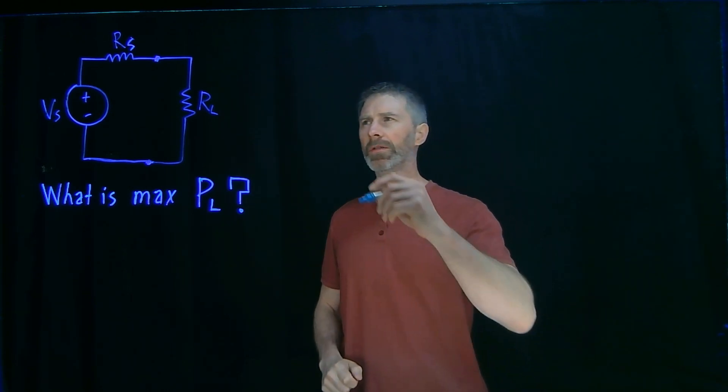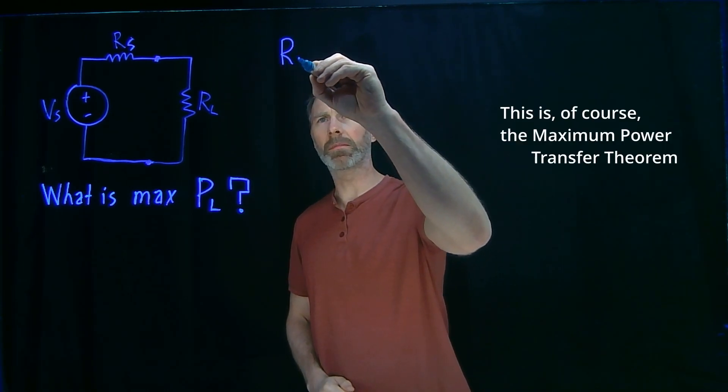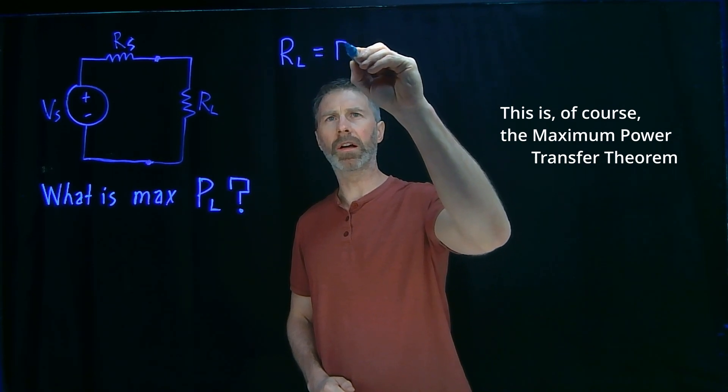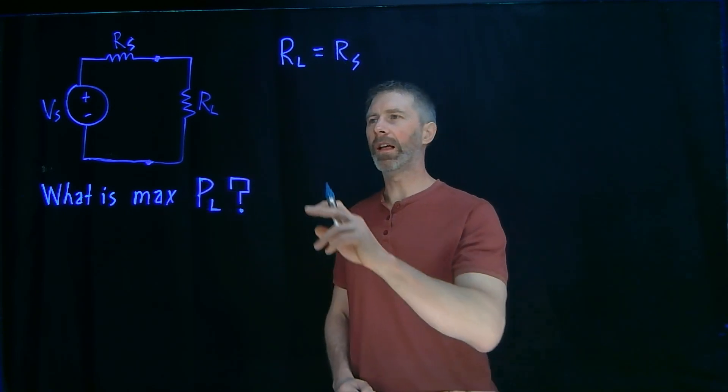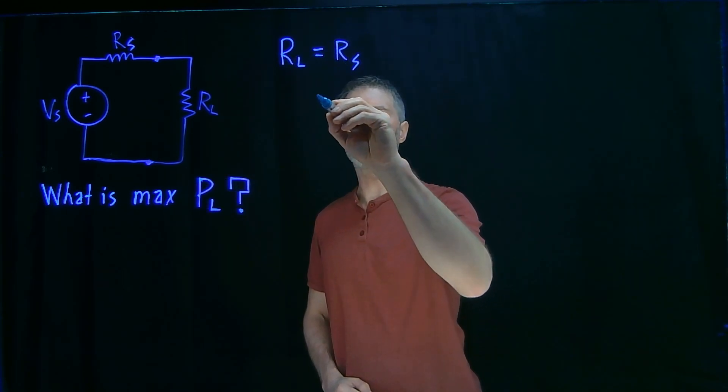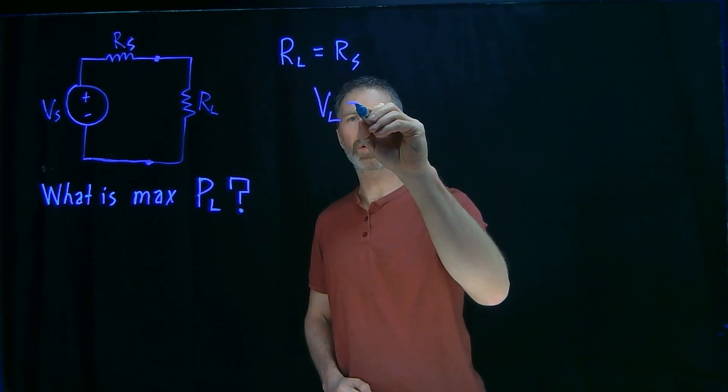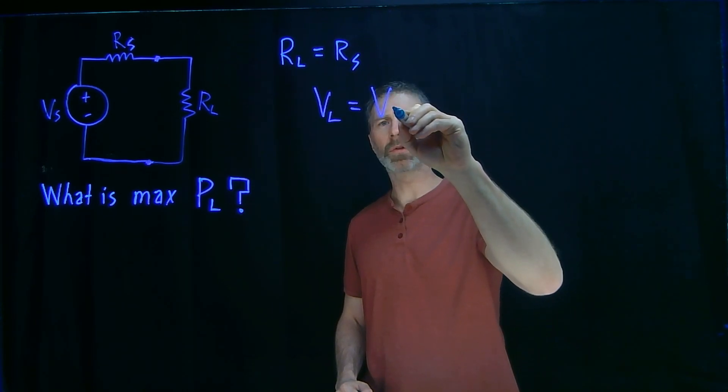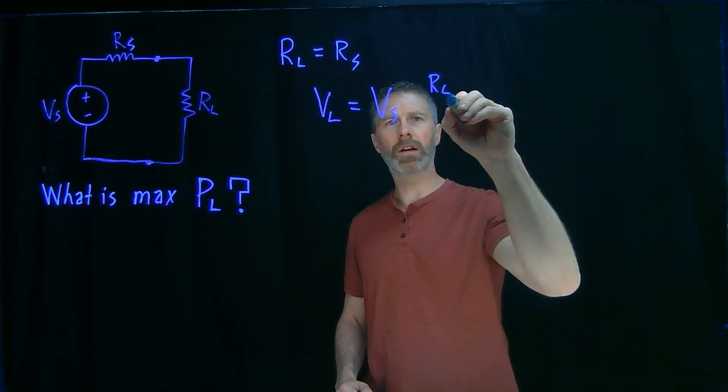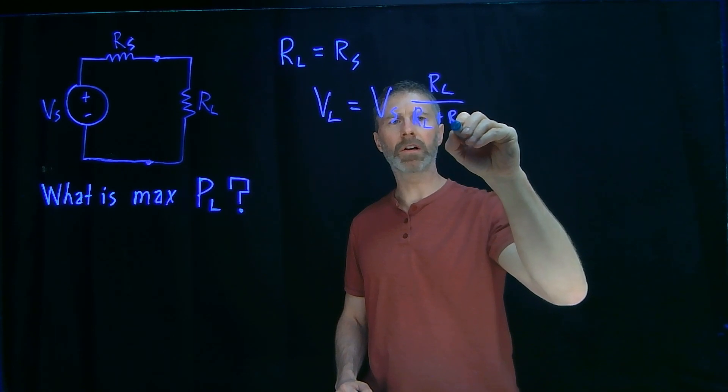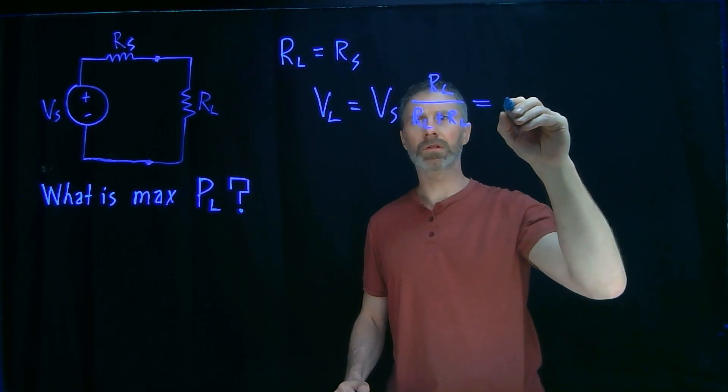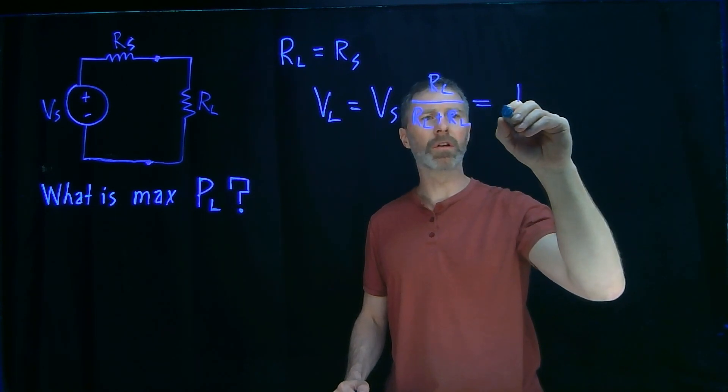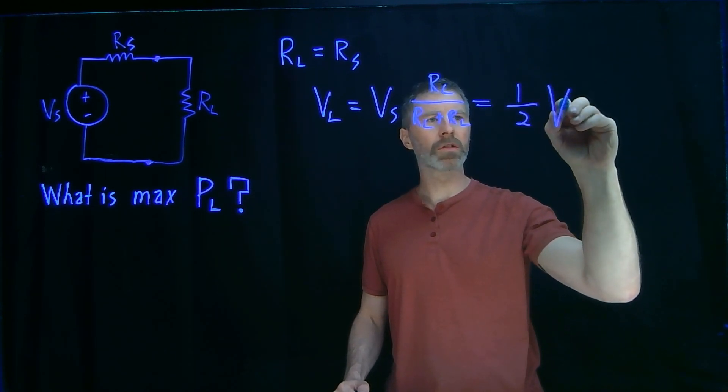From a previous video, you know that you're going to get the maximum power delivered to the load when RL is equal to RS. And when RL is equal to RS, the voltage across the load will be the source voltage times RL over RL plus RL, because RS is equal to RL. So this means the load voltage will be one-half the source voltage.